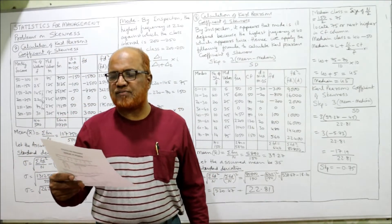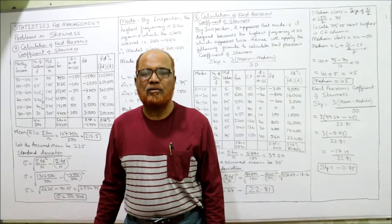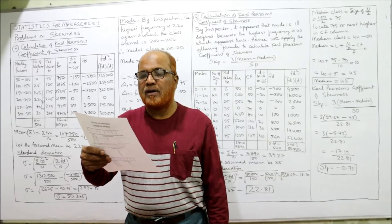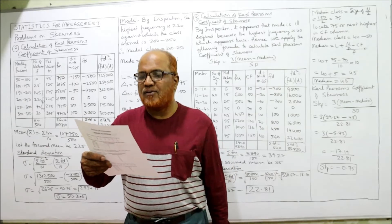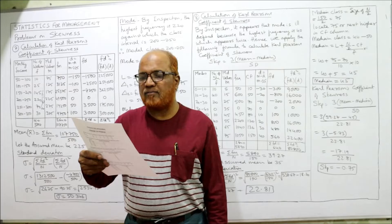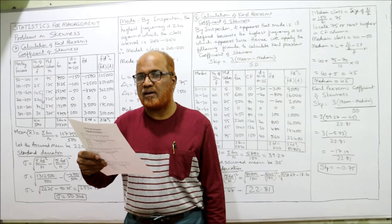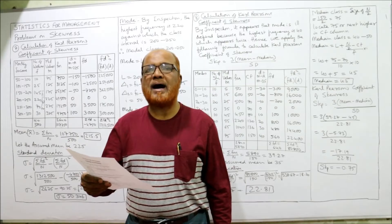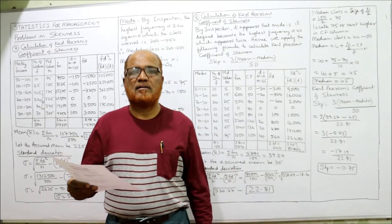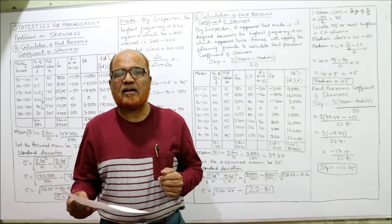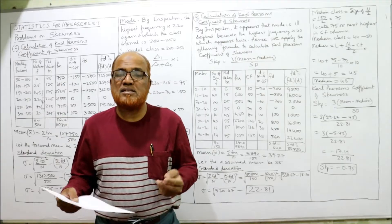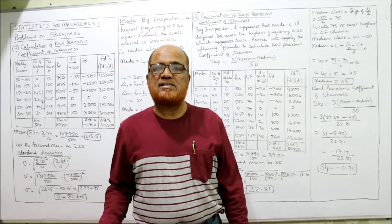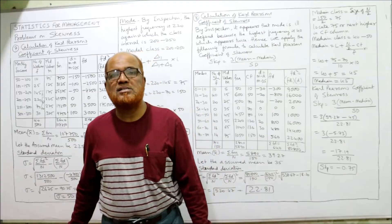Problem 8: Calculate Carl Pearson's coefficient of skewness from the following data. One new point is there in this problem. Marks: 0–10 (10 students), 10–20 (40), 20–30 (20), 30–40 (0), 40–50 (10), 50–60 (40), 60–70 (16), 70–80 (14). The peculiarity here is that the highest frequency 40 occurs twice — it's a bimodal problem. Mode is ill-defined.